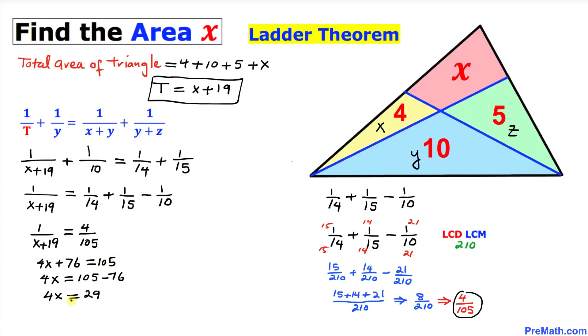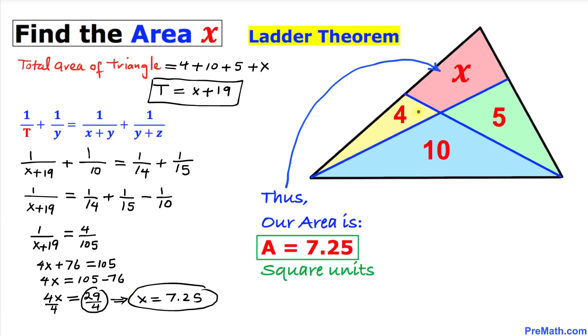Once we simplified we got 4x equals 29. We are going to divide both sides by 4 to isolate x, so x value turns out to be 29 over 4, or in terms of decimal that's going to be 7.25. Thus the area of this quadrilateral turns out to be 7.25 square units. That's our final answer.